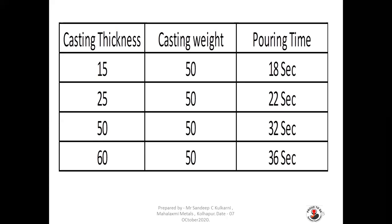You can see here that the casting weight is similar — 50 kg — across all examples, while casting thickness varies from 15, 25, 50, and 60 mm. Correspondingly, the pouring time also varies: 15 mm → 18 seconds, 25 mm → 22 seconds, 50 mm → 32 seconds, 60 mm → 36 seconds. As casting thickness increases, pouring time increases.